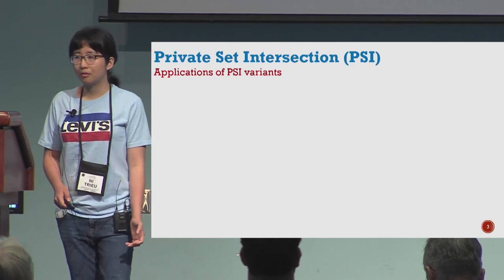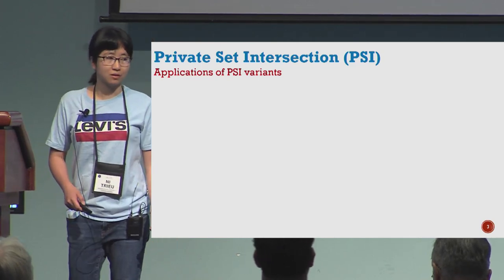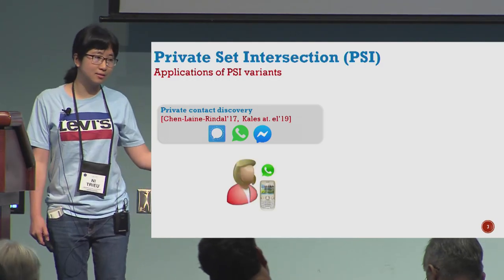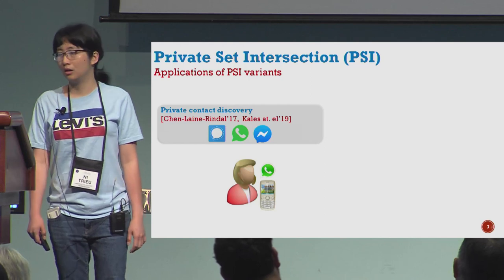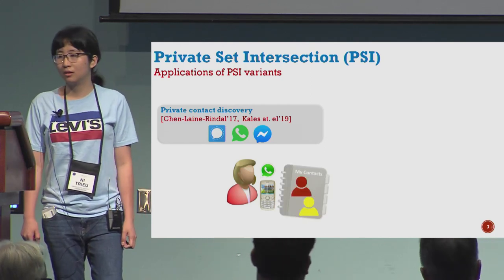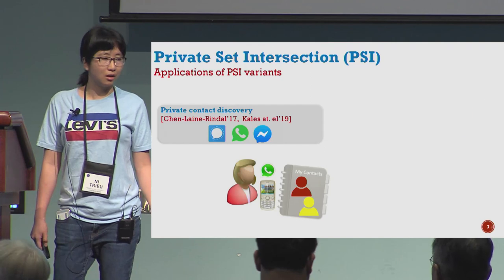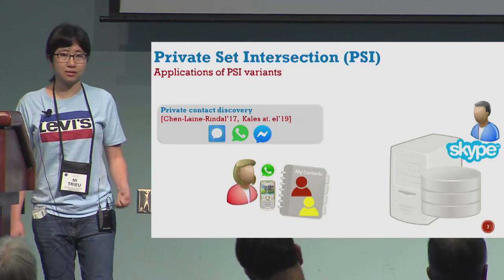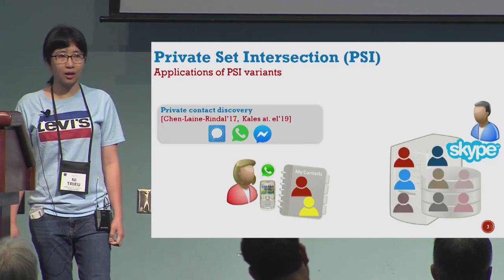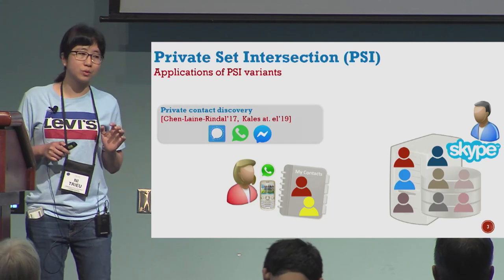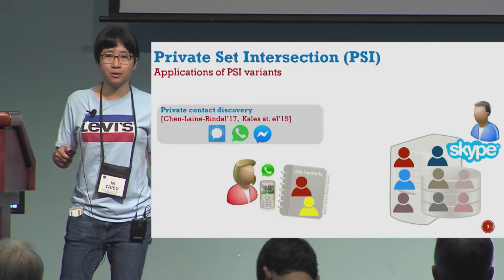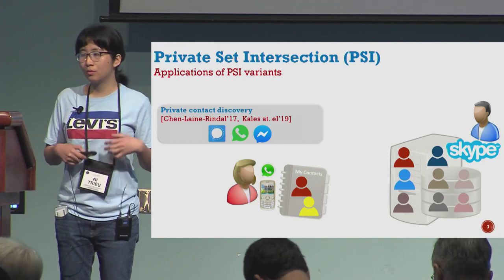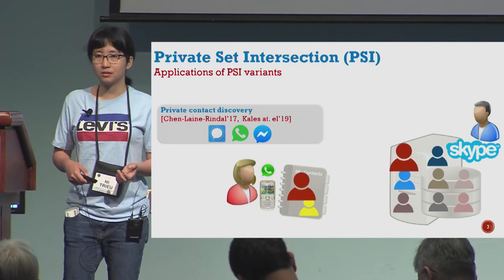PSI has many applications and my favorite one is private contact discovery. In this scenario, Alice has a phone with a list of her friends, and Bob is the Skype server provider with a list of users. Alice wants to find out which of her friends use Skype so she can chat with them.